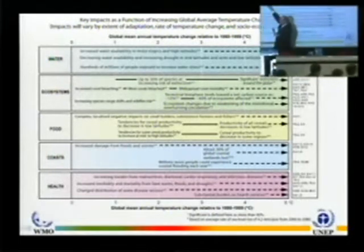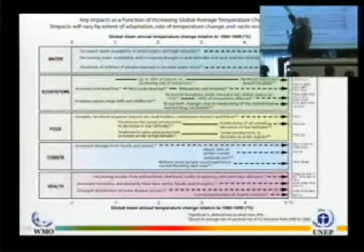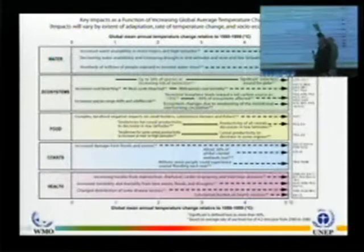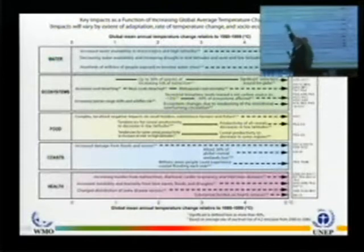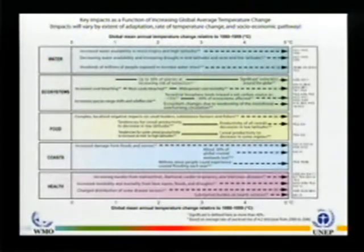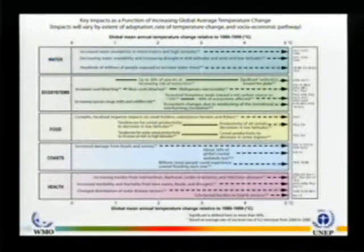For high latitudes — the problem areas in terms of emitters — yields are likely to increase because a little bit of warmth doesn't do them any harm. But Easterling and colleagues, Agravala, have found this turns down at some point. Globally, you put these two together, and somewhere around one or two degrees you get a global downturn in productivity from climate change. That's a key point of inflection.